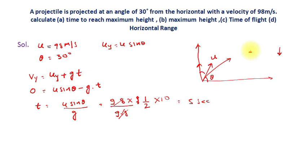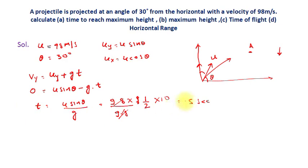After 5 seconds, the projectile is at maximum height point A. At this point, the y-component of velocity is zero — it is momentarily stopped. However, the x-component Ux = U·cosθ remains. Since there is no acceleration along the x-axis, Ux is always constant. So the time to reach maximum height is 5 seconds.